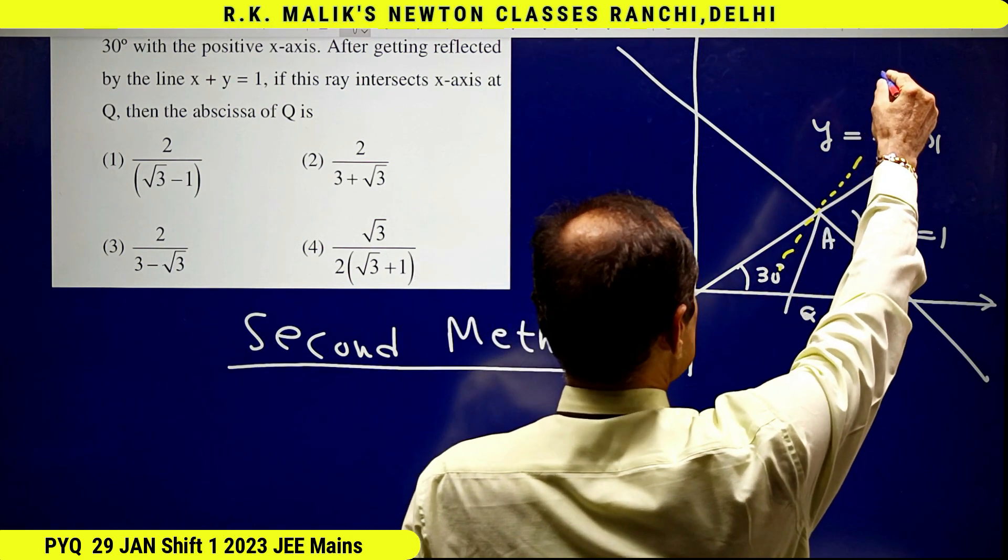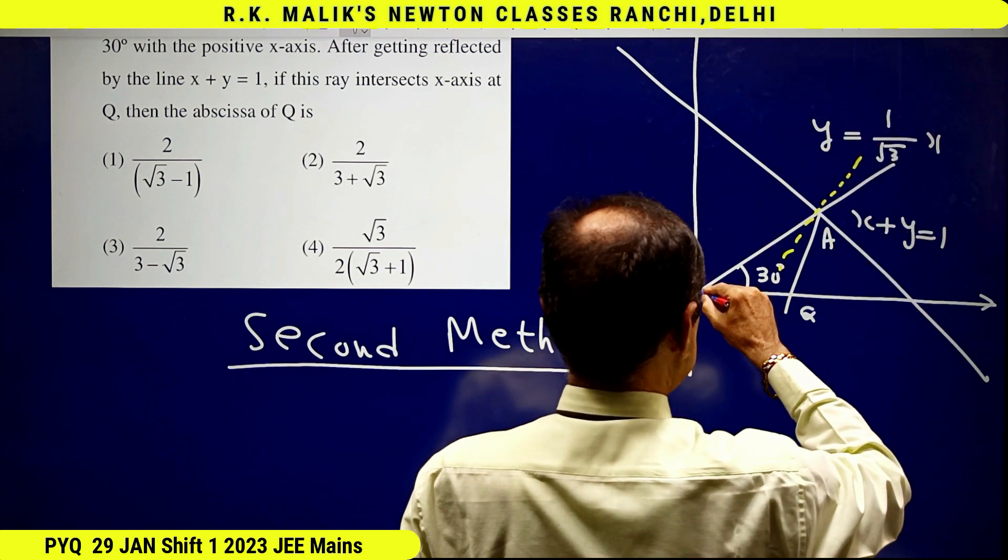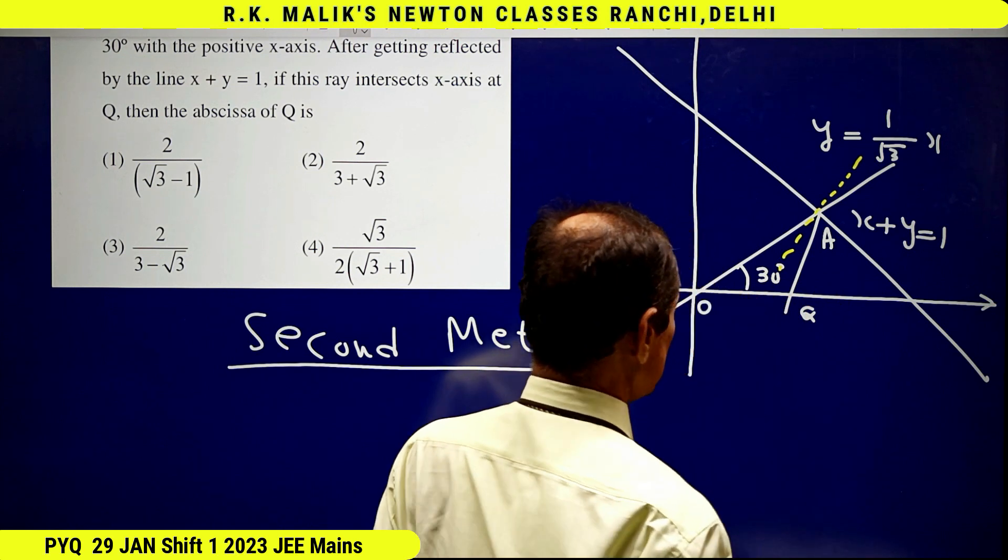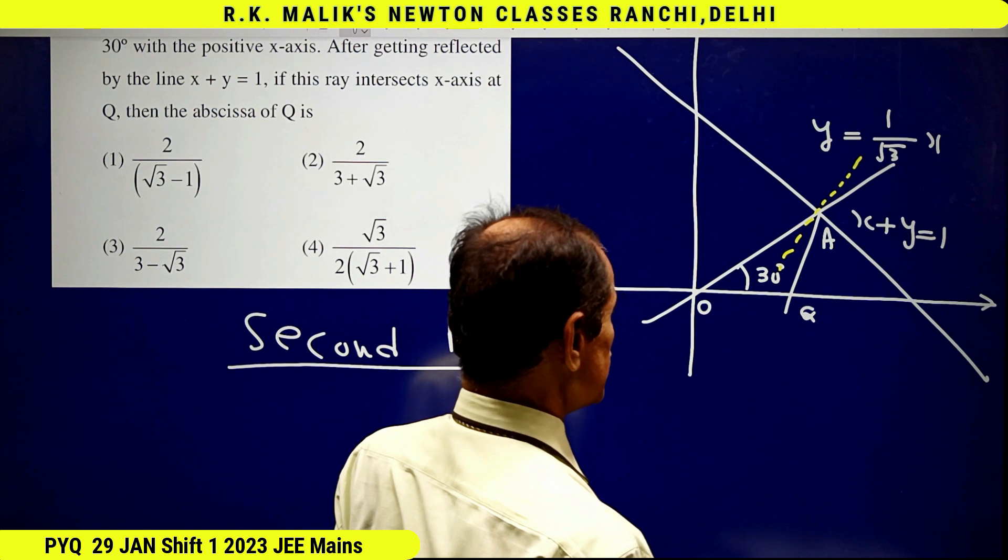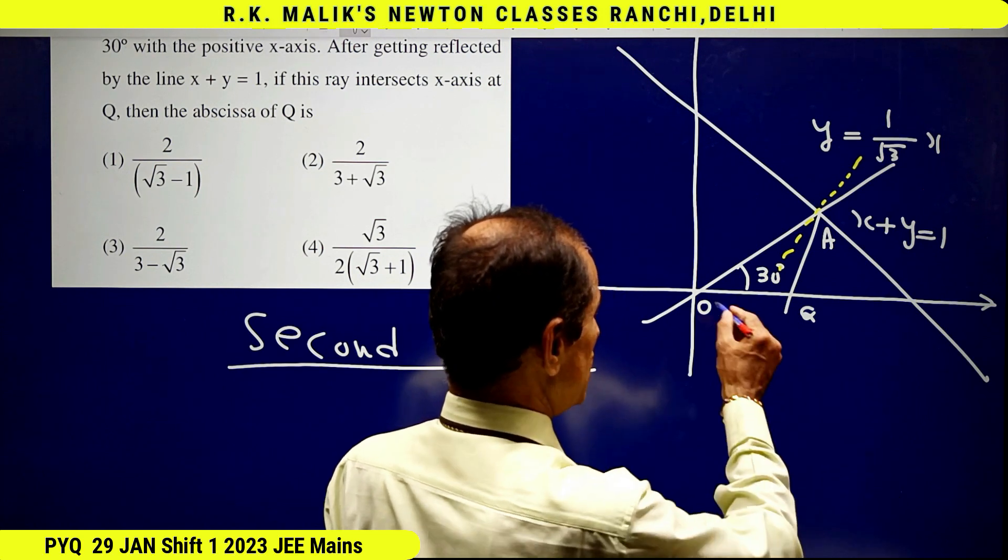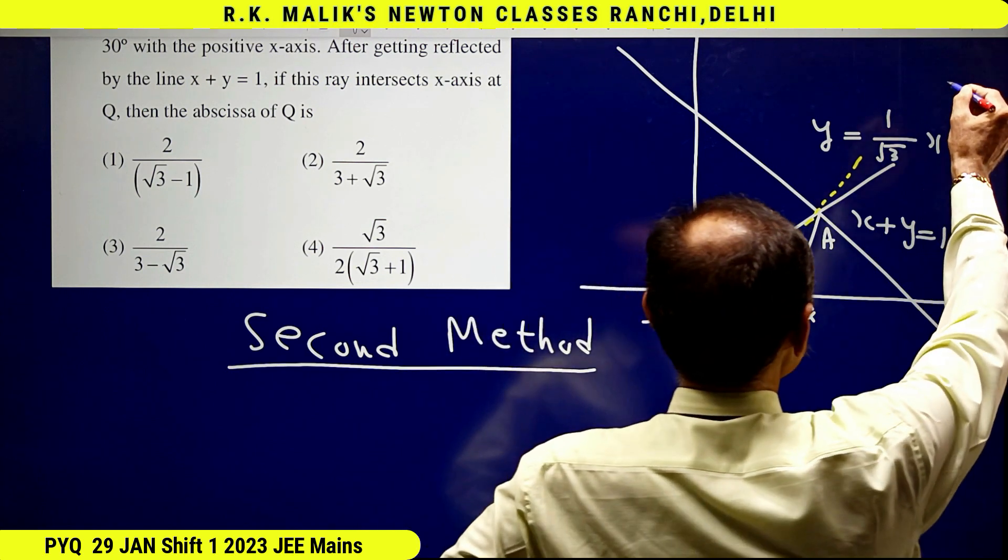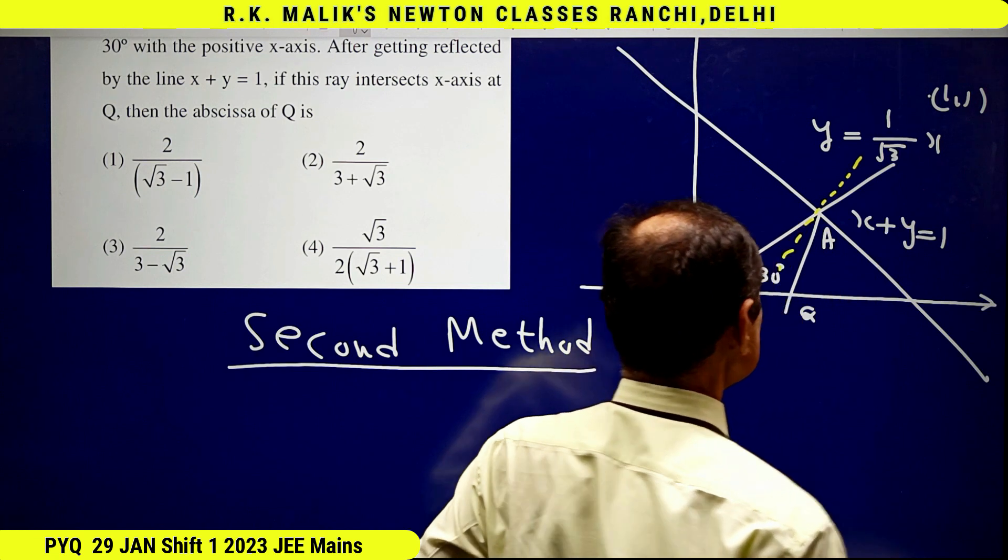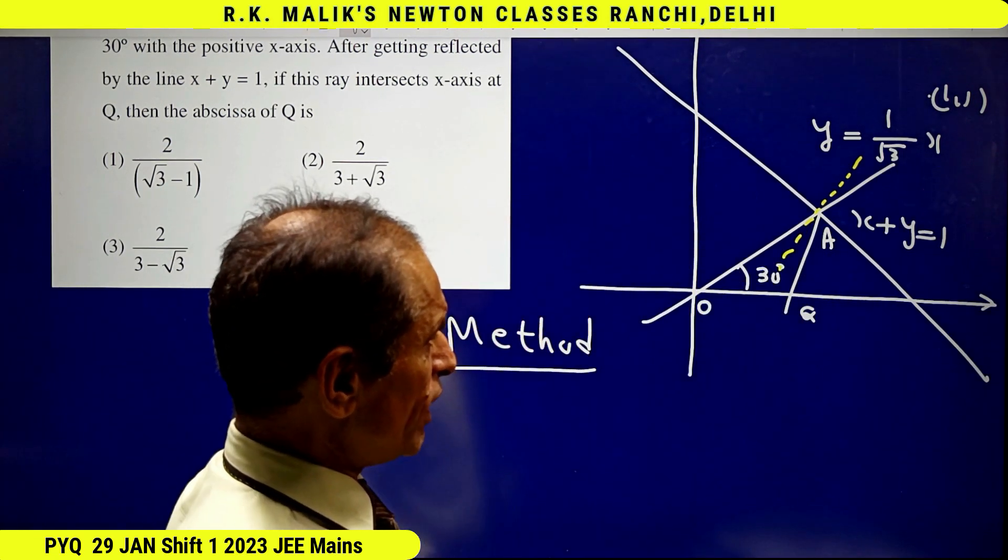...when produced backward, will surely pass through the image of this point in this line—the image of origin in this line. It's very easy to say that the image of origin in this line will have the coordinate (1,1). Without doing any calculation, I can directly say...